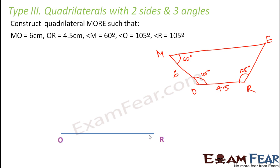In your previous classes you learned how to draw angles. You can draw an angle using a protractor, or using a compass. Prefer using a compass so that the entire construction can be done with just a ruler and compass. So how do you draw an angle of 105° using a compass? Let's quickly remember.